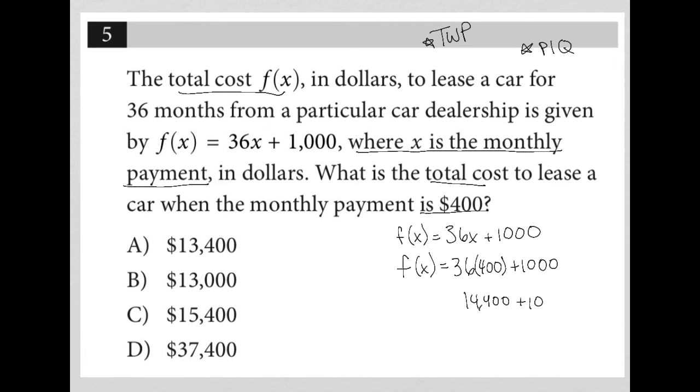36 times 400 is equal to 14,400. Of course, I'm still adding 1,000 to that in order to figure out what f of x is. So I know now that f of x is equal to 15,400.